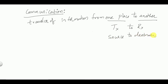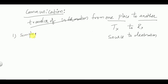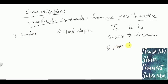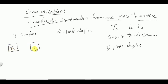Generally, communication is the process of transfer of information from transmitter to receiver, or from source to destination. Based on the transfer of information from transmitter to receiver, communication is classified into three types: the first type is simplex communication, second is half duplex, and the third is full duplex.